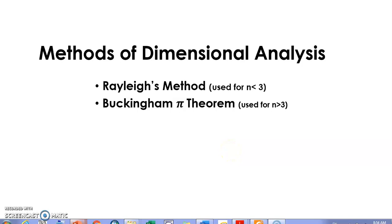In this segment we will try to understand the methods of dimensional analysis. There are two methods we'll cover: the first one is Rayleigh's method and the second one is Buckingham's Pi theorem. Rayleigh's method is applicable when the number of variables is less than three, and becomes tedious if n exceeds three. Buckingham's Pi theorem is used efficiently wherever n exceeds three. In this segment, we'll concentrate only on Rayleigh's method.